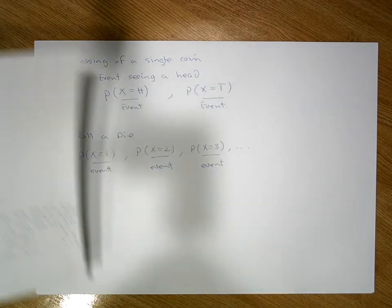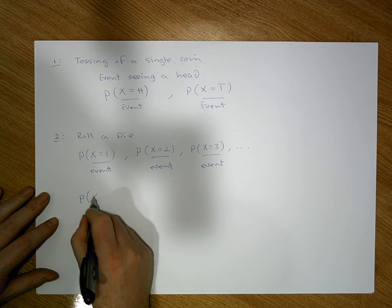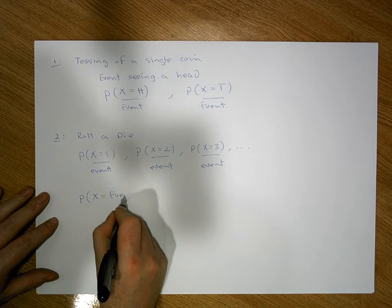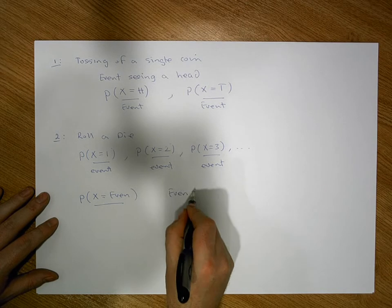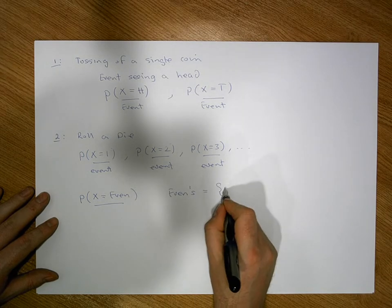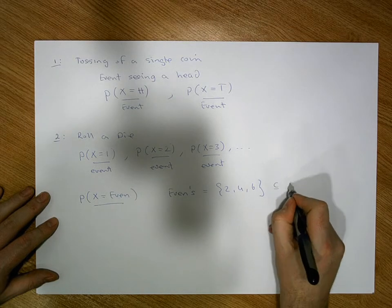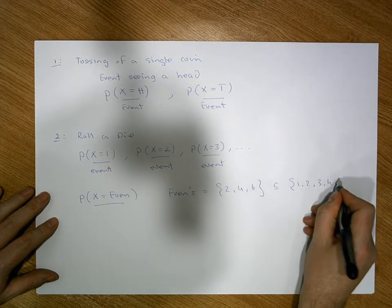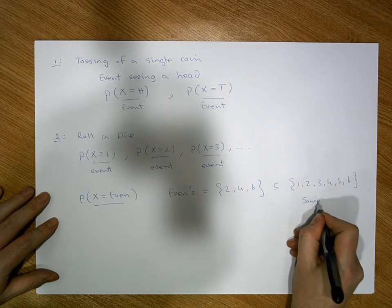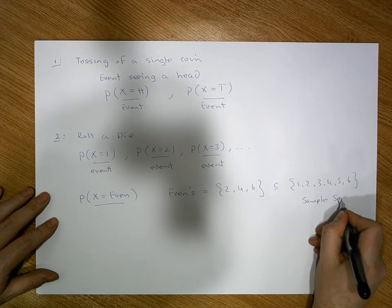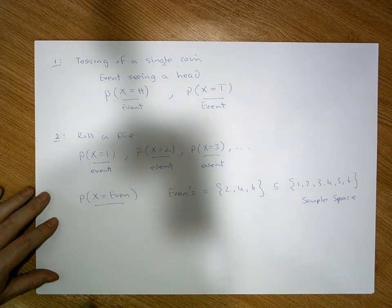I could make it a little bit more complicated. I could say, what's the probability that when I roll a die, I get an even number? This is an event. The even numbers are the values 2, 4, and 6. The set {2, 4, 6} is a subset of {1, 2, 3, 4, 5, 6}, which is the sample space associated with rolling a die. This is clearly a subset of the sample space, so this is an event.